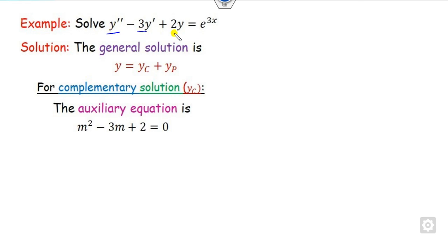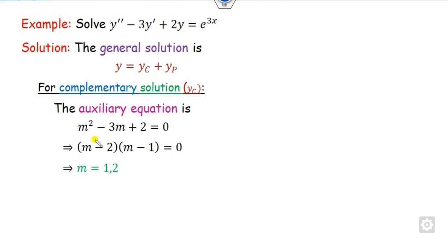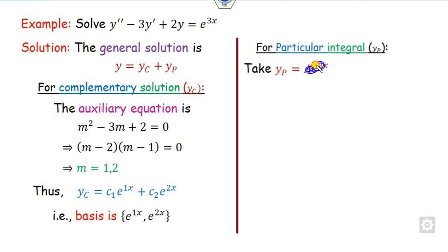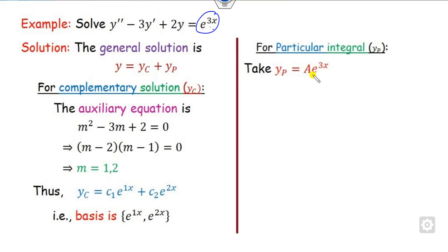We write the auxiliary equation as m² − 3m + 2 = 0. The roots are easily found to be 1 and 2. So the complementary solution is yc = c₁e^x + c₂e^(2x). Now for the particular integral: since the right-hand side is exponential of the form e^(3x), we take yp = Ae^(3x) and find the constant A. We check whether e^(3x) is present in yc — it clearly is not. What happens if it is present will be seen in Example 2.